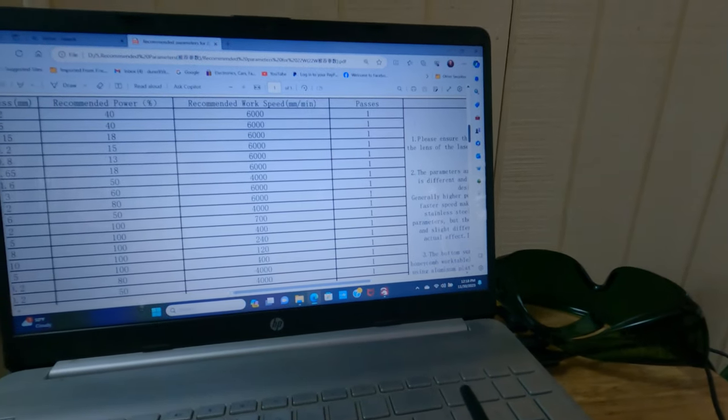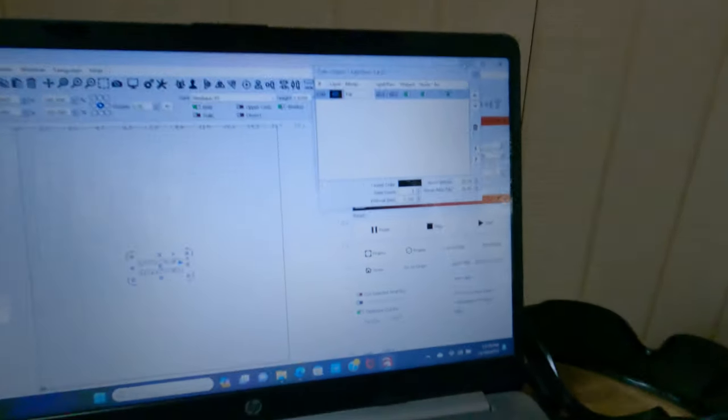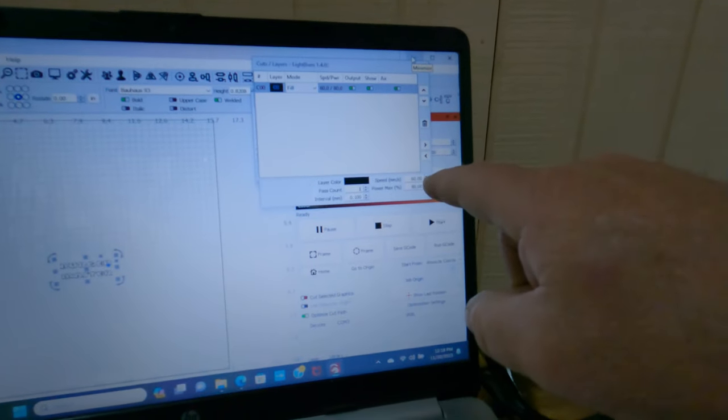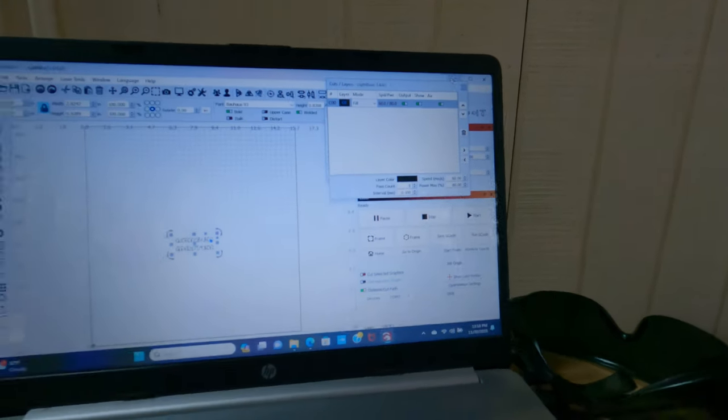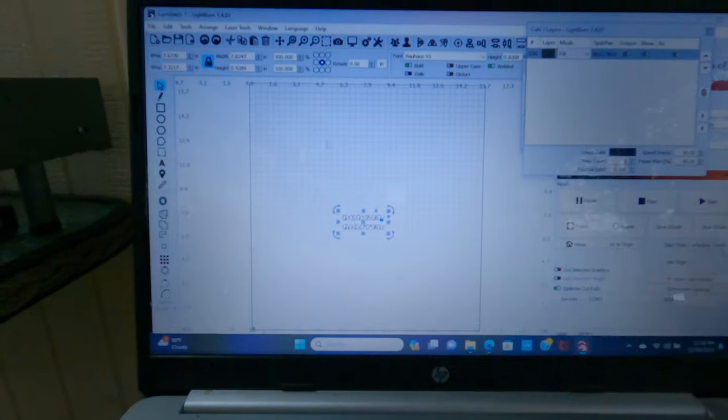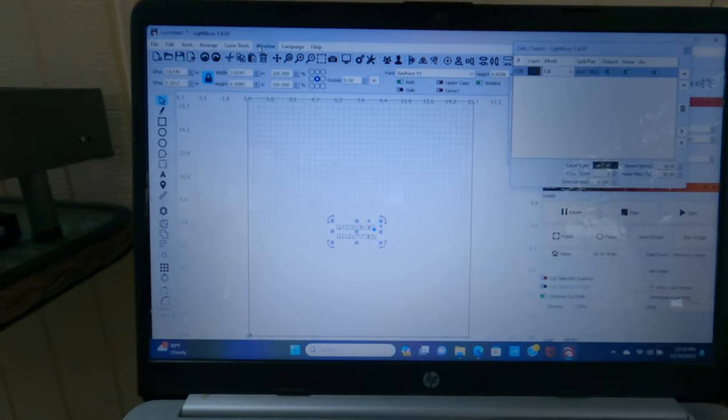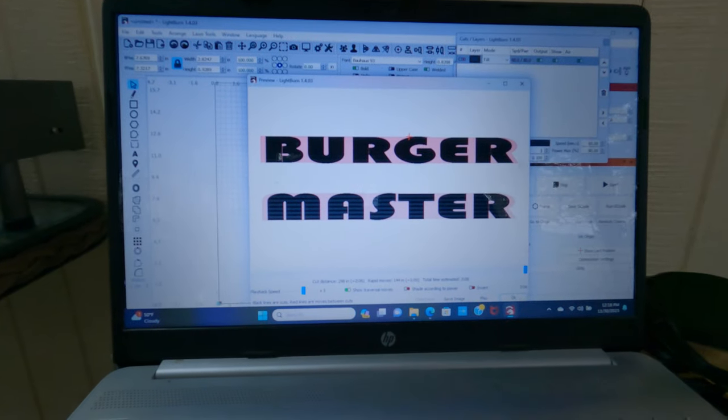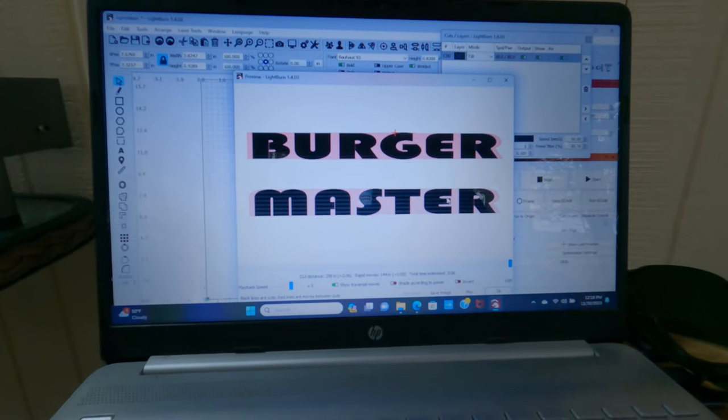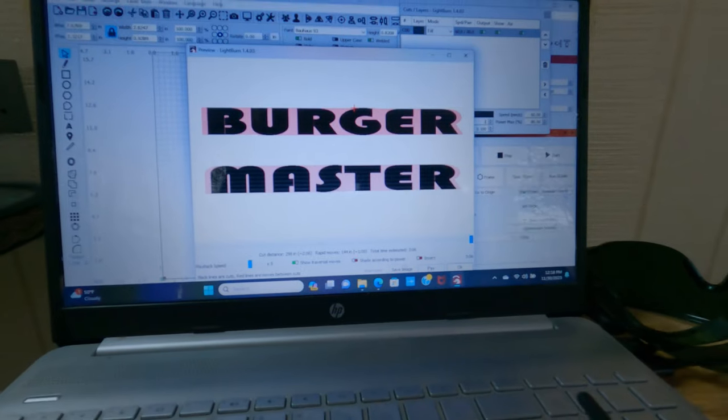As you can see here in LightBurn, I've got it set up for speed of 60, power of 80, one pass. I've got Burger Master is what I'm going to print. We're going to hit preview and I'm going to fill that in. That is going to be engraved. We'll go ahead and hit play. It's going to show me what's going to go down. You can speed that process up by just dragging it. So now all we've got left to do is frame it.